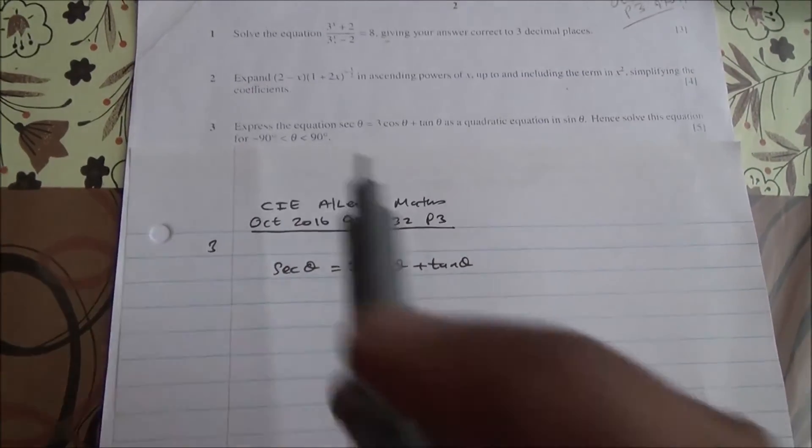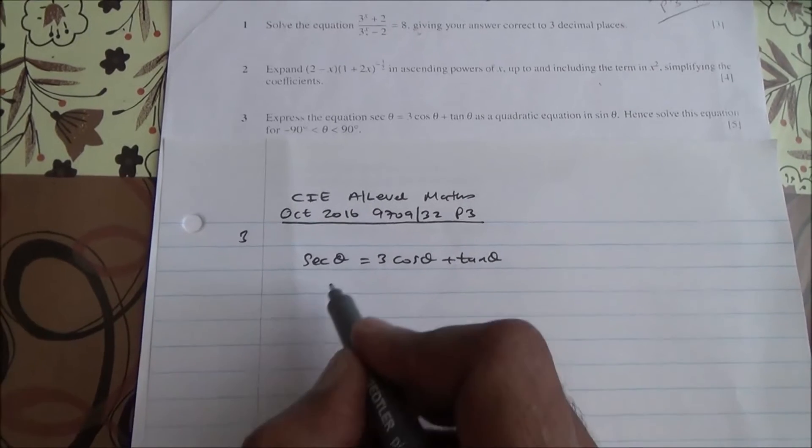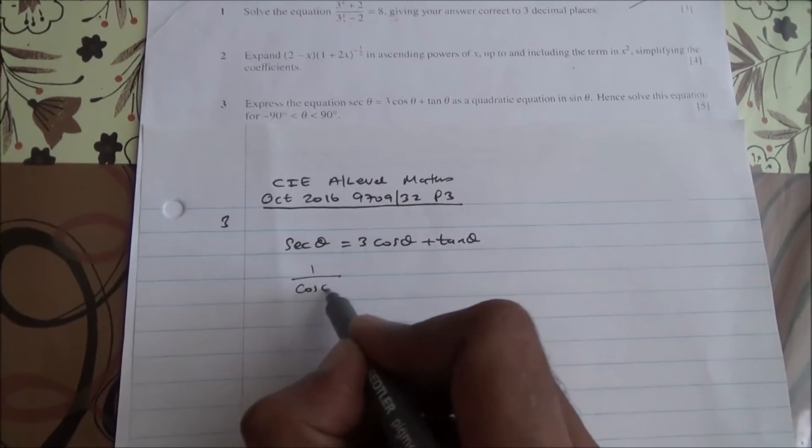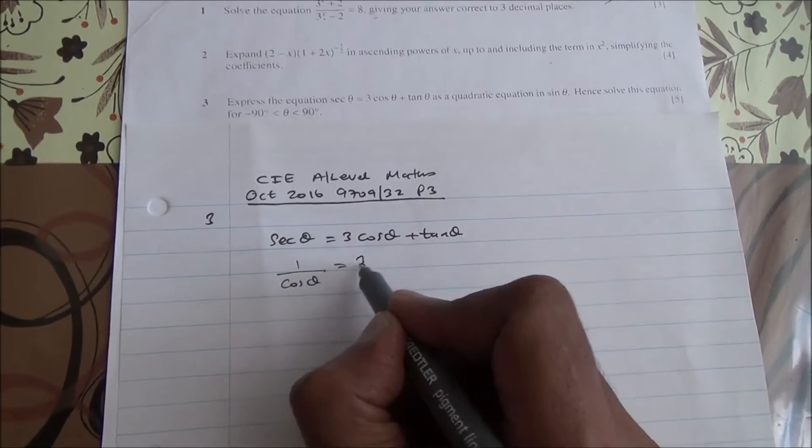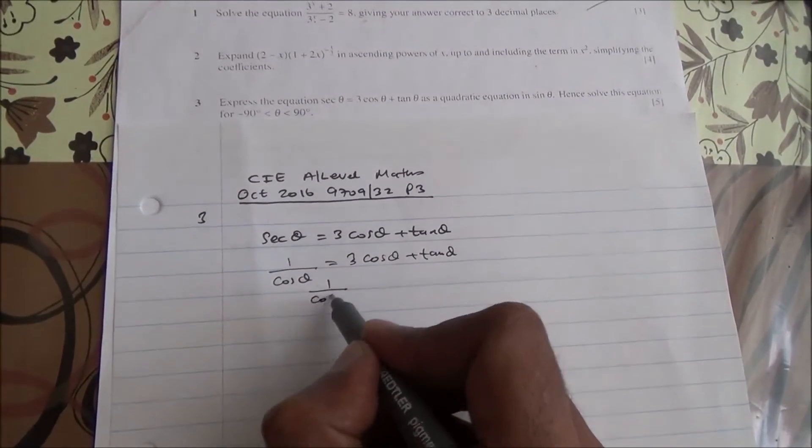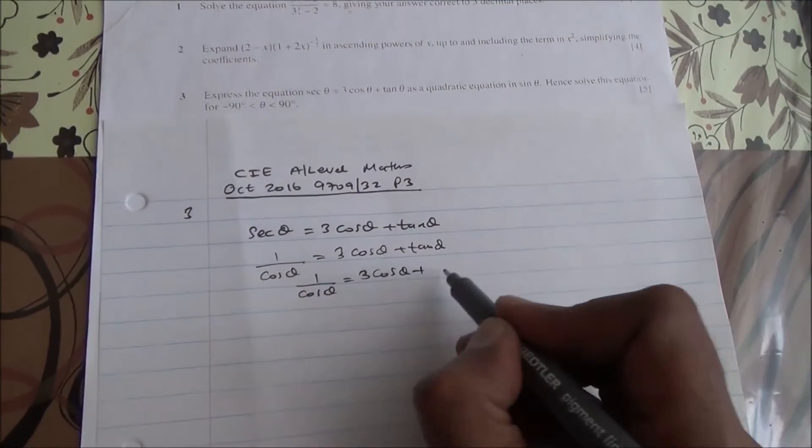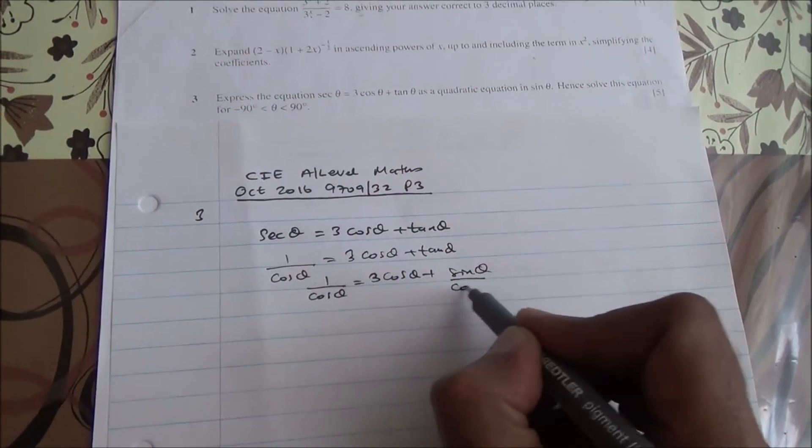For values from -90° to 90°, what is sec θ? We're looking at 1/cos θ = 3cos θ + tan θ, so we have 1/cos θ = 3cos θ + sin θ/cos θ.